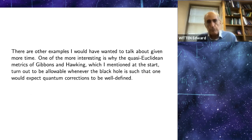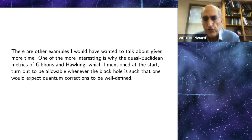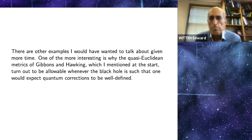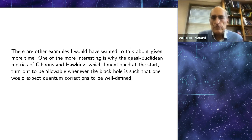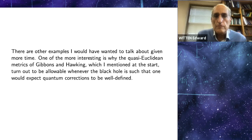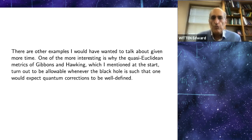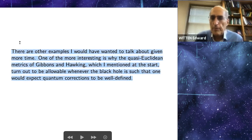There are other examples I would have wanted to talk about given more time. One of the more interesting is why the quasi-Euclidean metrics of Gibbons and Hawking turn out to be allowable whenever the black hole is such that one would expect quantum corrections to be well-defined. Quantum corrections to a rotating black hole are not necessarily well-defined because in an asymptotically Minkowski spacetime, a particle at large distances from the black hole has a very large angular momentum compared to its mass, causing the thermal ensemble with rotation included to be unstable. So the quasi-Euclidean metric is actually not allowed in the asymptotically flat case. But if you put a constraint on the angular momentum so that the ensemble is expected to be well-behaved, then you find that the quasi-Euclidean metric is allowable.